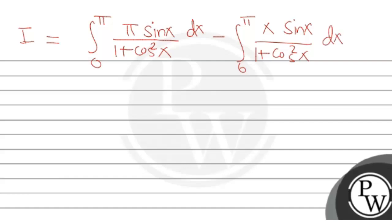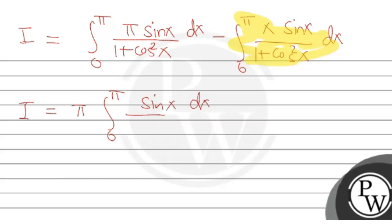Now if we look at this, we have I plus I, giving us 2I. Adding the two expressions: 2I equals π times the integral from 0 to π of sin x upon (1 + cos²x) dx. We can factor out π since it is a constant.